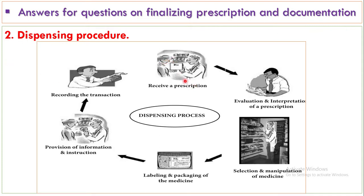The second part is the dispensing procedure. First, you have to receive a prescription from your patient. After receiving the prescription, you have to evaluate and interpret it. After interpreting the prescription, you have to select and manipulate a medicine from your store. Then, after selecting and manipulating the medicine, you have to label and package it. Then you have to provide clear and neat information to your patient. After giving clear information, you have to record the transaction done in the dispensary unit.